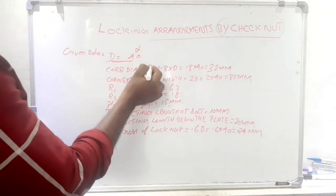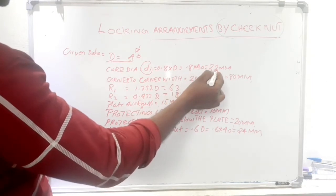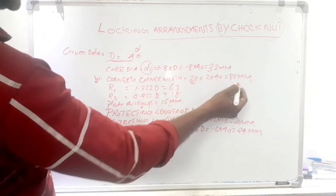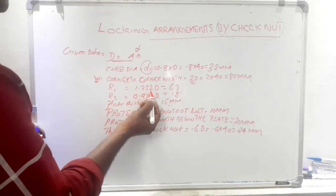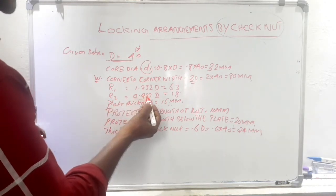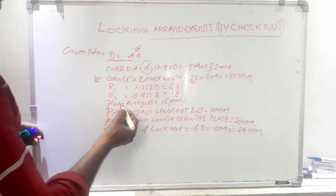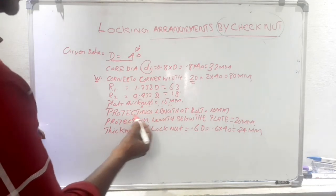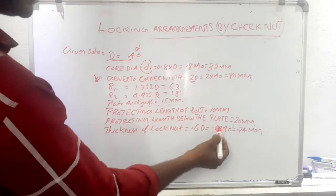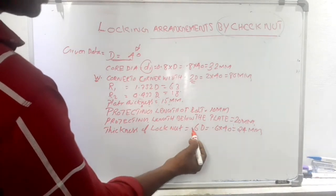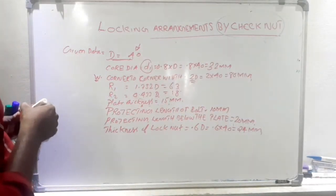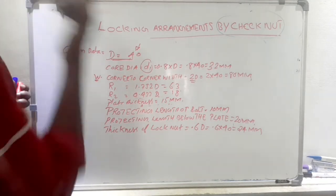The given data: D = 40. Core diameter D1 = 0.8D = 0.8 into 40 = 32 mm. Width across corners = 2D = 2 into 40 = 80 mm. R1 (center radius) = 1.732 into 40 ≈ 63 mm. R2 (side radius) = 0.433 into 40 ≈ 18 mm. Plate thickness = 15 mm. Projecting length of bolt above the locking nut = 10 mm. Projecting length below the plate = 20 mm. Thickness of lock nut = 0.6D = 0.6 into 40 = 24 mm.